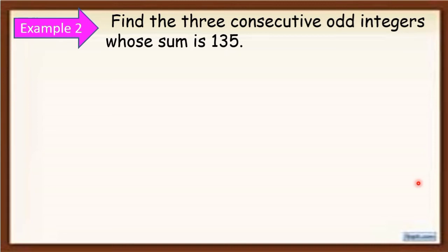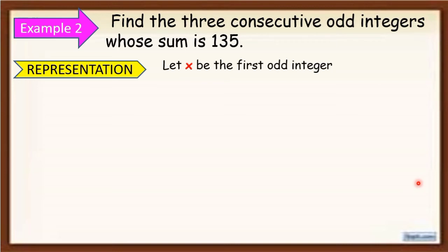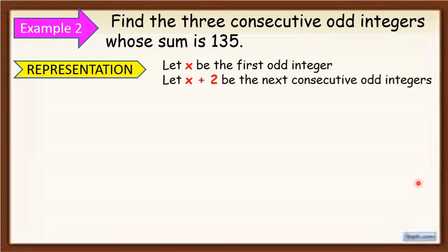Let's make a representation. Let x be the first odd integer. Then let x plus 2 be the next consecutive odd integer. Bakit x plus 2 at hindi x plus 1? Since the problem says consecutive odd integers — magkasunod na odd integers — yung mga odd numbers ay by 2 ang pagitan nila. Halimbawa, 1, skip, 3, skip, 5. So imbis na x plus 1, ang gagawin natin ay x plus 2.